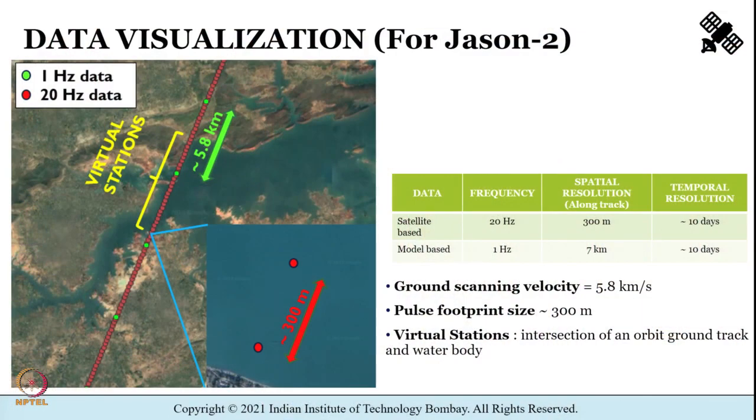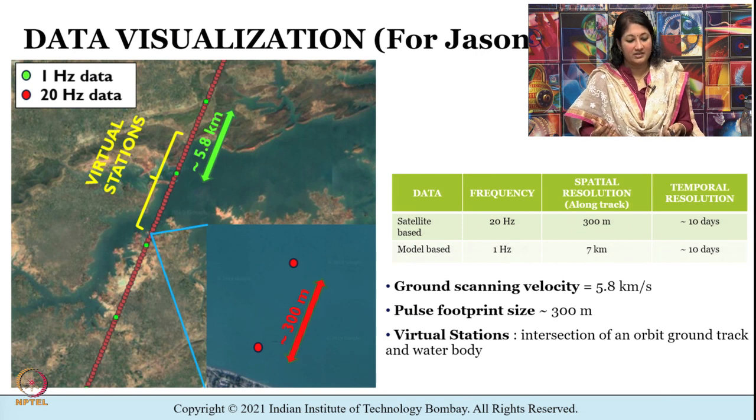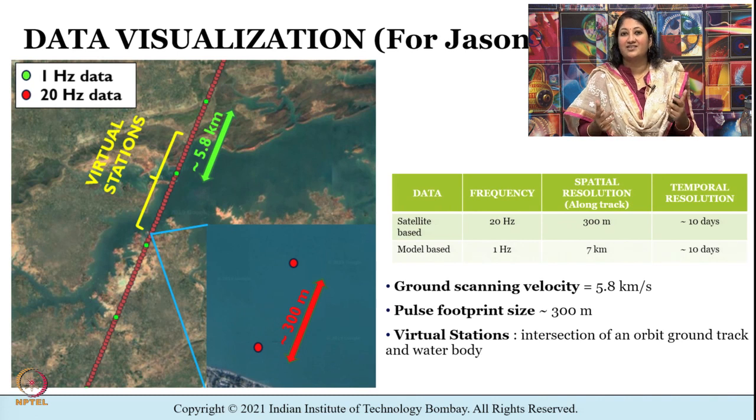Hello and welcome to this section of tutorial 7 on handling active microwave data using Python. In the first section we understood the data from grey satellites, learned to visualize it in Python, and studied the fundamentals of satellite altimetry for water levels from space. We looked at specific missions like Jason and Saral, and visualized Jason 2 data, which has two types of variables: model-based variables from numerical weather prediction models and satellite-based variables, differing in spatial and temporal resolution.